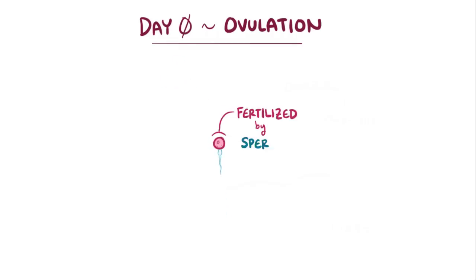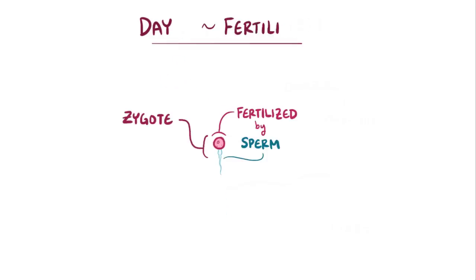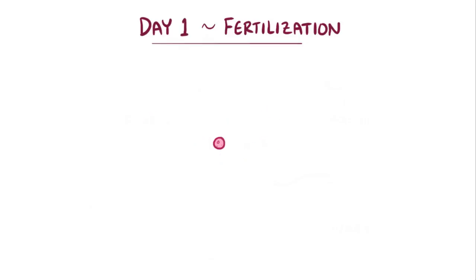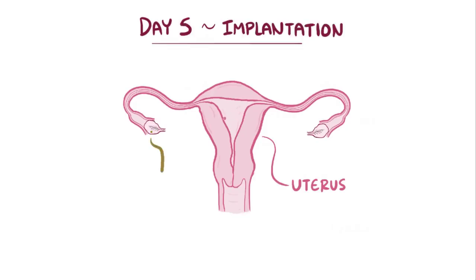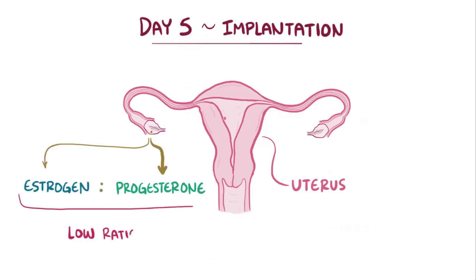Normally, the egg gets fertilized by sperm within 12–24 hours to form a zygote. So let's say that fertilization happens a day later, on day one. Almost right away, cells start to divide over and over until there's a ball of cells called the blastocyst on day four. The blastocyst typically floats around inside the uterus for another day before it finds a specific spot to implant on day five. Around this time, the corpus luteum makes a lot more progesterone relative to estrogen, and the low estrogen-to-progesterone ratio is necessary for implantation.